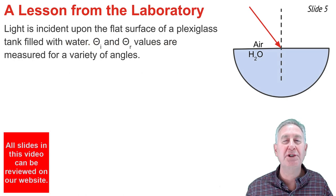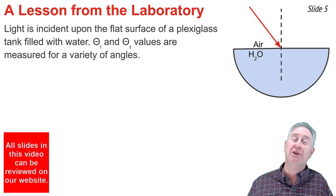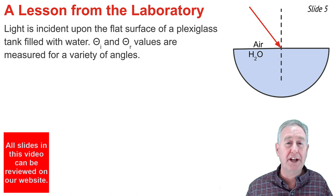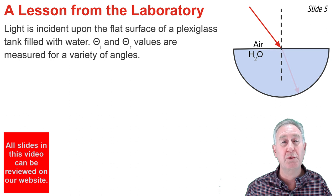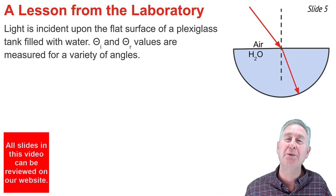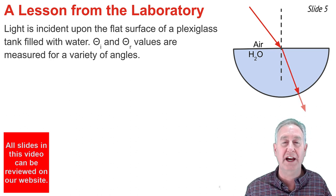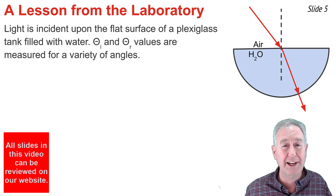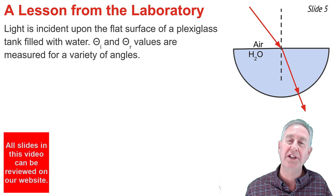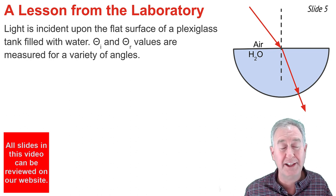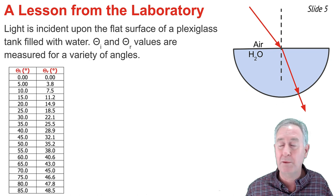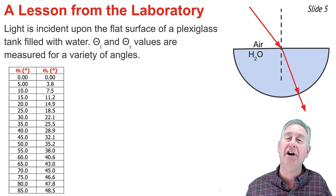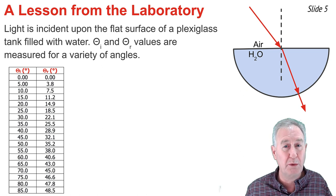A common physics lab involves the use of a hemicylindrical dish of water. Laser light is directed towards the midpoint of the flat side of the dish. The light refracts towards the normal line and enters the water, then exits the curved side while traveling along the normal line at that surface — and does not undergo refraction there. The angle of incidence in air and the angle of refraction in the water can be measured, producing a data set.